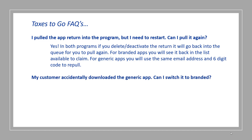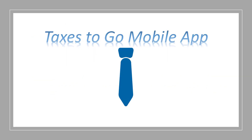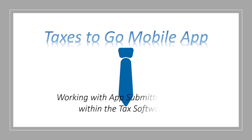My customer accidentally downloaded the generic app. Can I switch it to branded? Unfortunately, once the account has been created, there isn't a way to switch from generic to branded. The user will need to uninstall the app and create a new account with a different email. We want to thank you for watching this TaxLayer Pro training video on the Taxes to Go mobile app, working with app-submitted returns within the tax software.